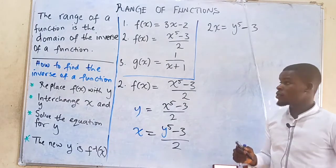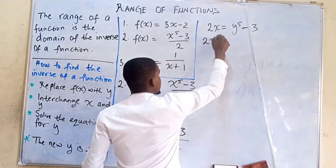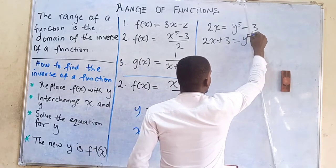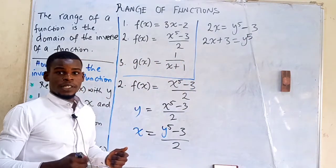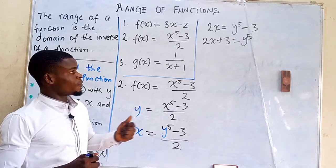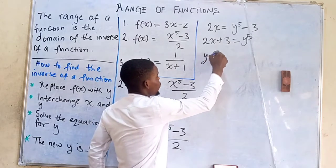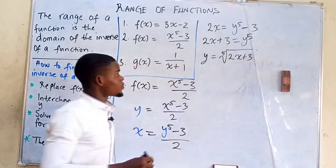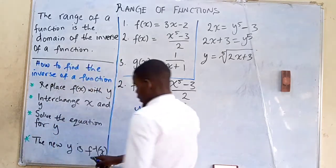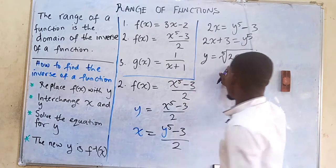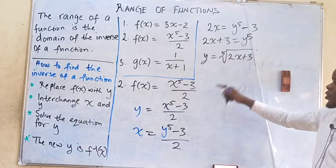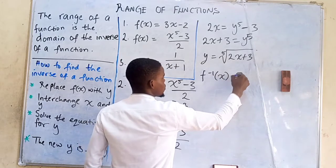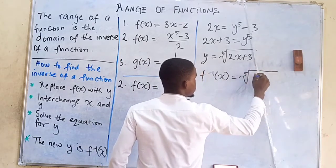Next, we add 3 to both sides, giving us 2x + 3 = y⁵. Now to isolate y, we take the fifth root of both sides. Taking the fifth root gives us y = ⁵√(2x + 3). This new y is the inverse of the given function f(x), so we denote it as f⁻¹(x) = ⁵√(2x + 3).